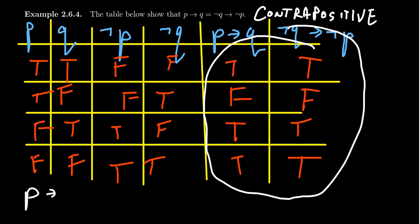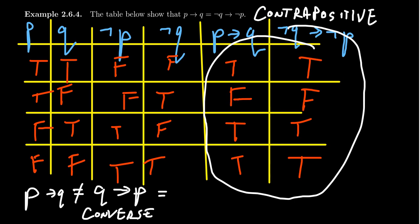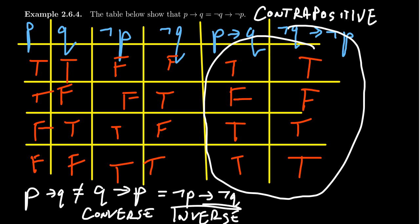I will leave it as an exercise to the viewer to show that the conditional P implies Q is not equivalent to its converse, Q implies P. So the converse and the conditional are, in fact, different statements. You can also show that the inverse, not P implies not Q, is logically equivalent to the converse. This is not too hard to see because the inverse is actually the contrapositive of the converse. Because of the law of contraposition, these two will be logically equivalent. But I'll leave it up to the viewer to show that a statement and its converse are not logically equivalent to each other.